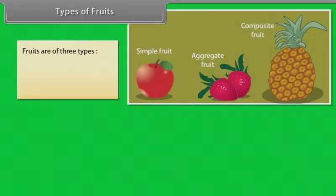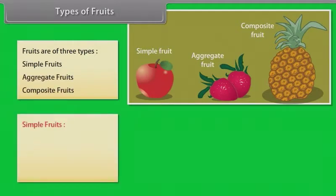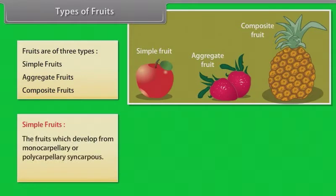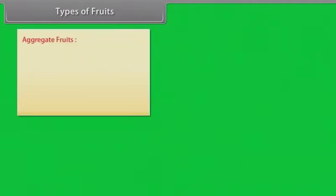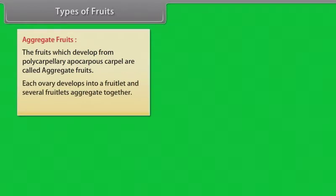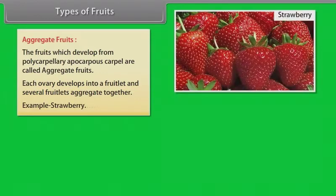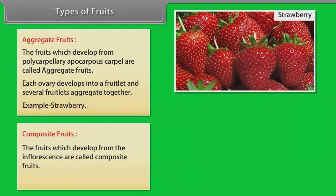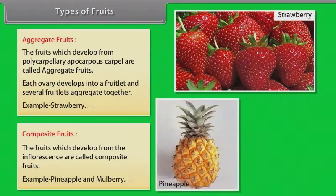Fruits are of three types: simple fruits, aggregate fruits, and composite fruits. Simple fruits develop from monocarpellary or polycarpellary syncarpous ovaries. Aggregate fruits develop from polycarpellary apocarpous carpels; each ovary develops into a fruitlet and several fruitlets aggregate together — example, strawberry. Composite fruits develop from the inflorescence — example, pineapple and mulberry.